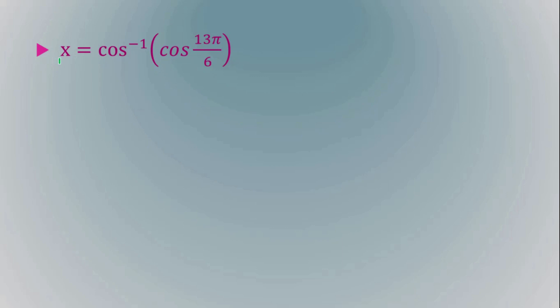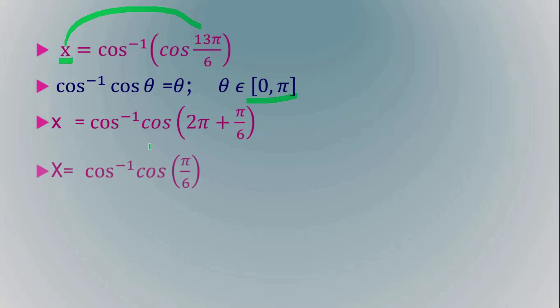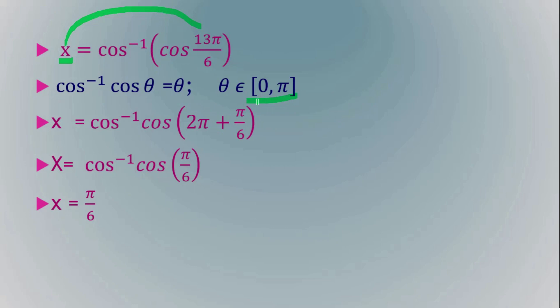Suppose you have to find X = cos⁻¹(cos(13π/6)). You cannot write directly X = 13π/6, because for cos the principal value branch is 0 to π, and 13π/6 is greater than π. So you solve further: write 13π/6 as 2π + π/6, and cos(2π + π/6) = cos(π/6). So X = π/6, which lies within 0 to π.